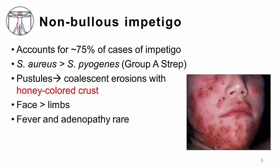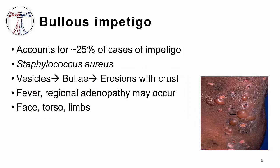These lesions are found most frequently on the face, especially around the mouth and nose, and also on the limbs. Happily, systemic symptoms are rare. Bullous Impetigo is significantly less common than the non-bullous form, representing approximately one-quarter of all cases.